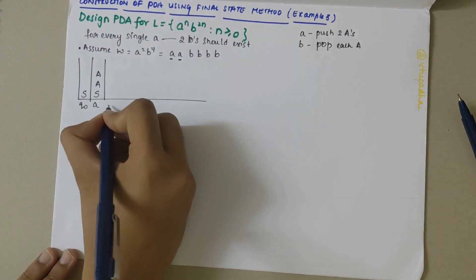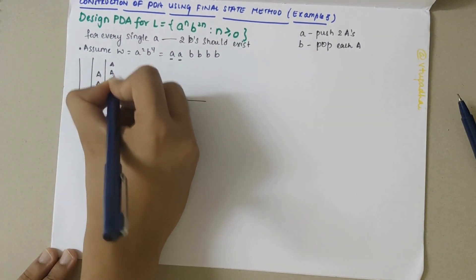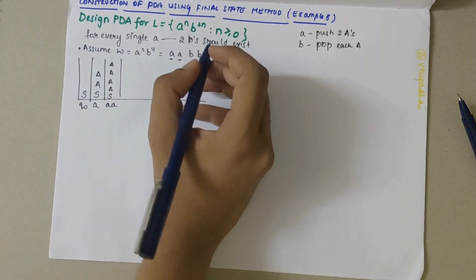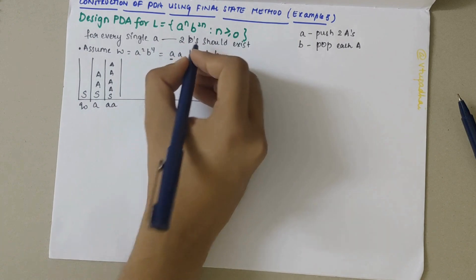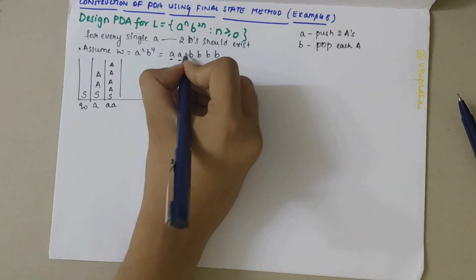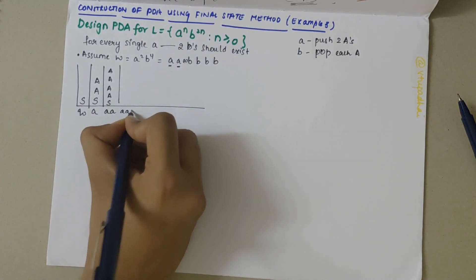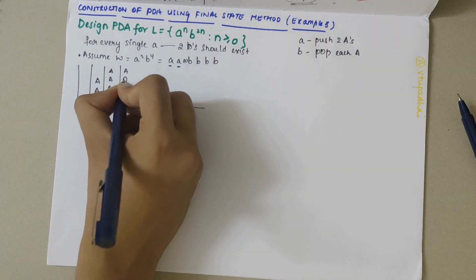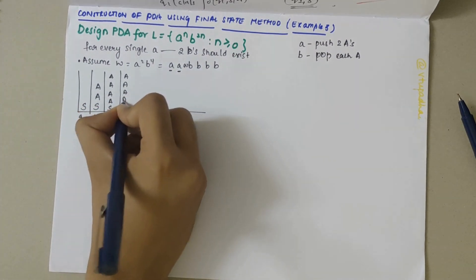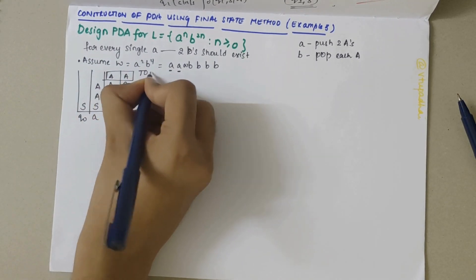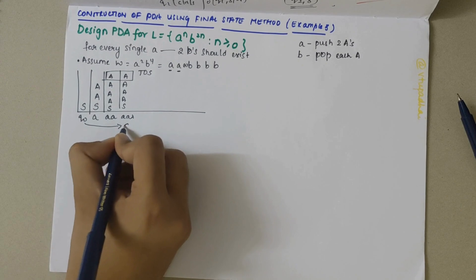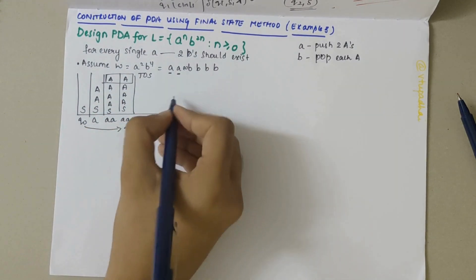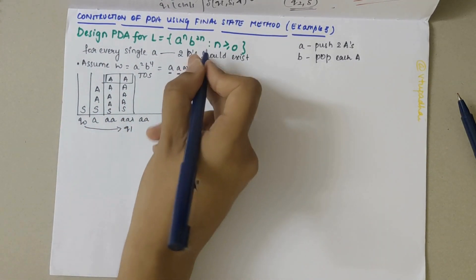Again I encountered one more 'a', so I should push again two A's. Next the alphabet is being changed from 'a' to 'b', so I'll put lambda here. When lambda is being read as input, whatever is on top of the stack is retained as-is, but there would be a transition from Q0 to the next state Q1.